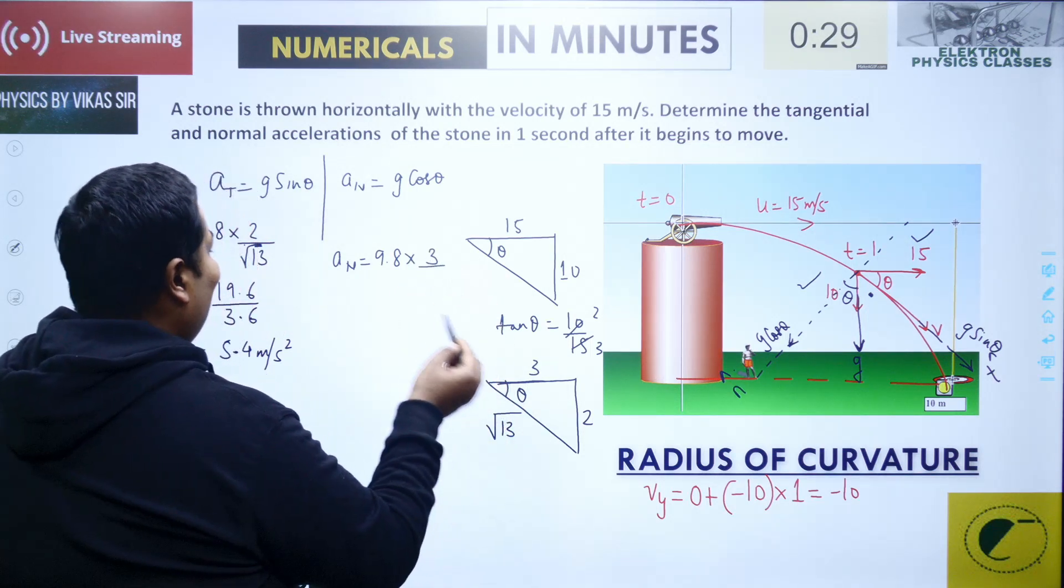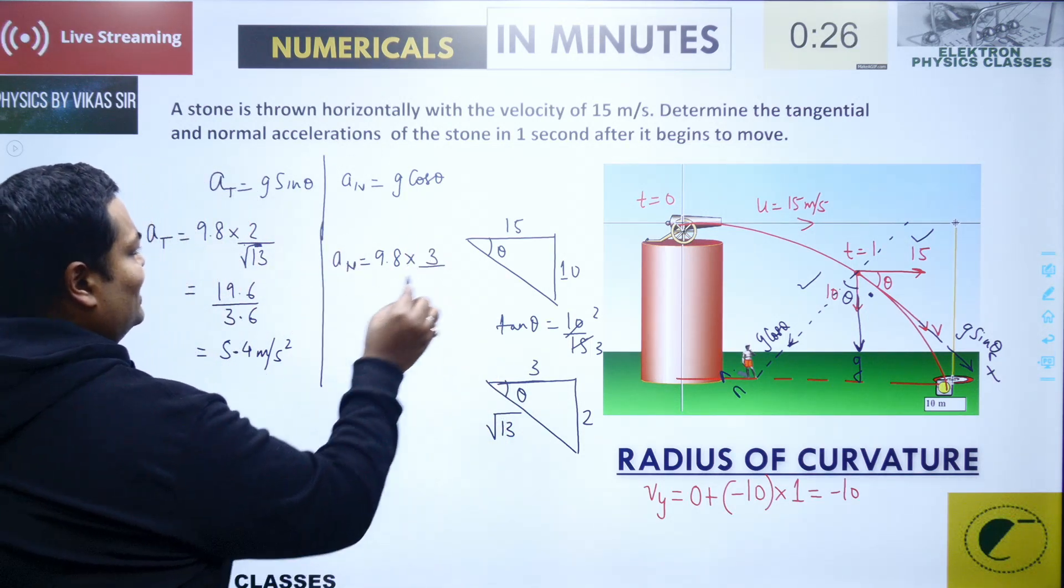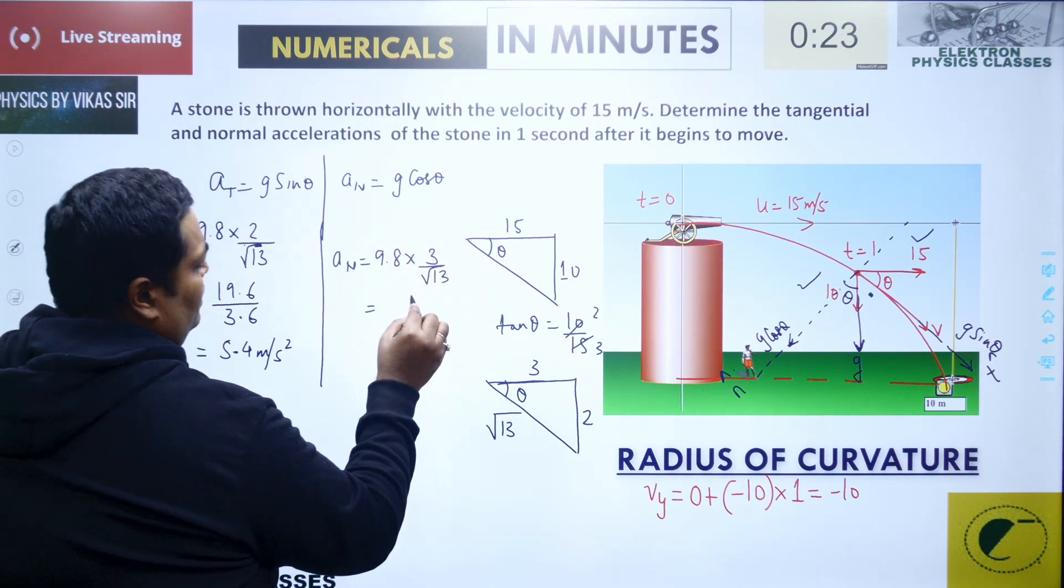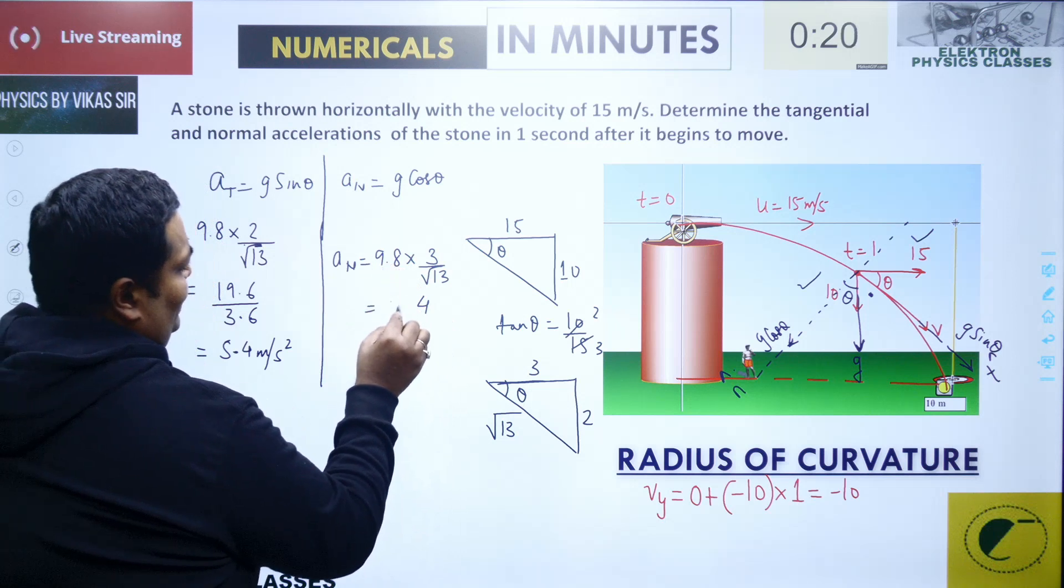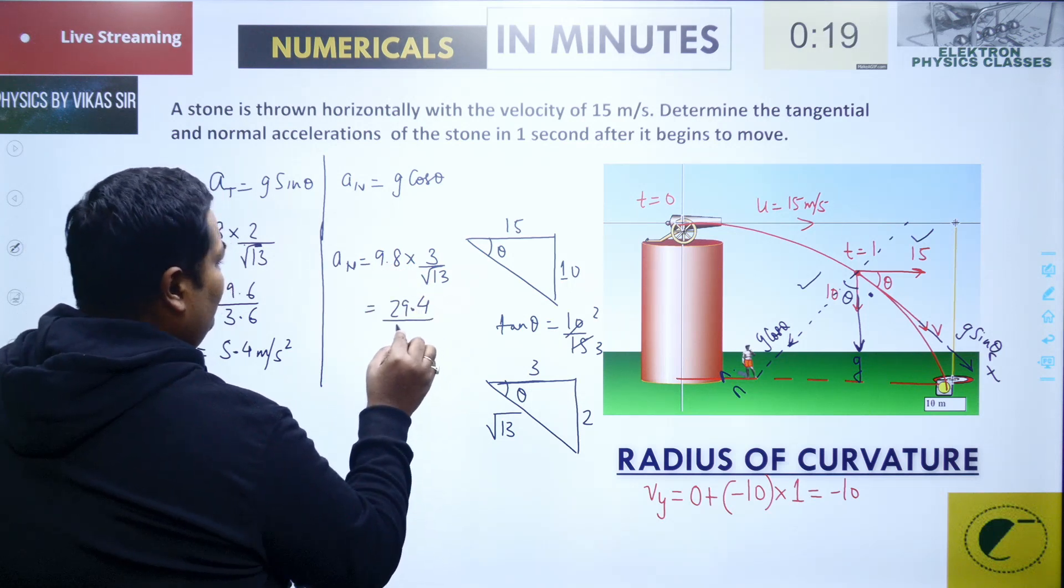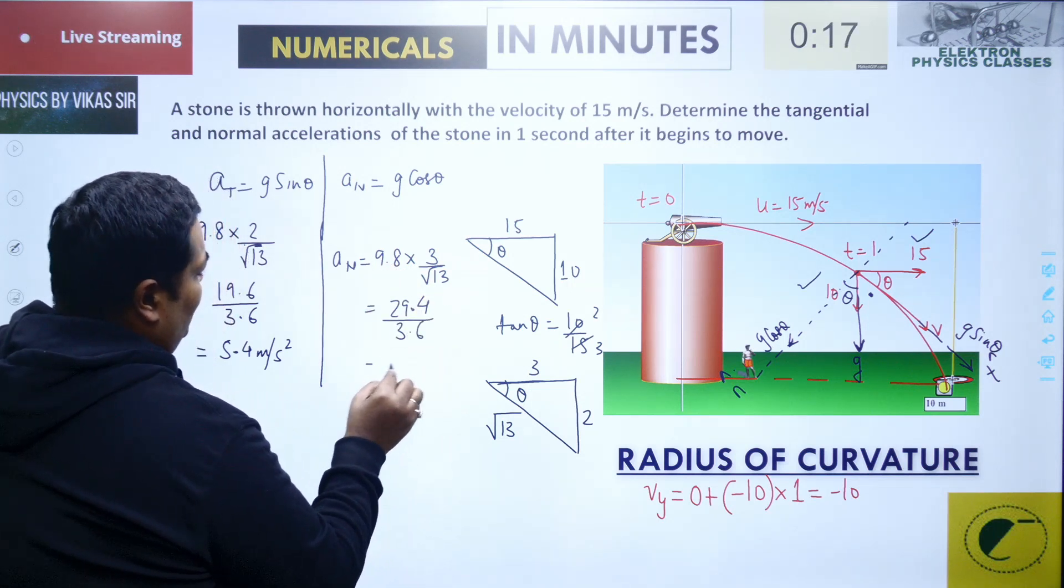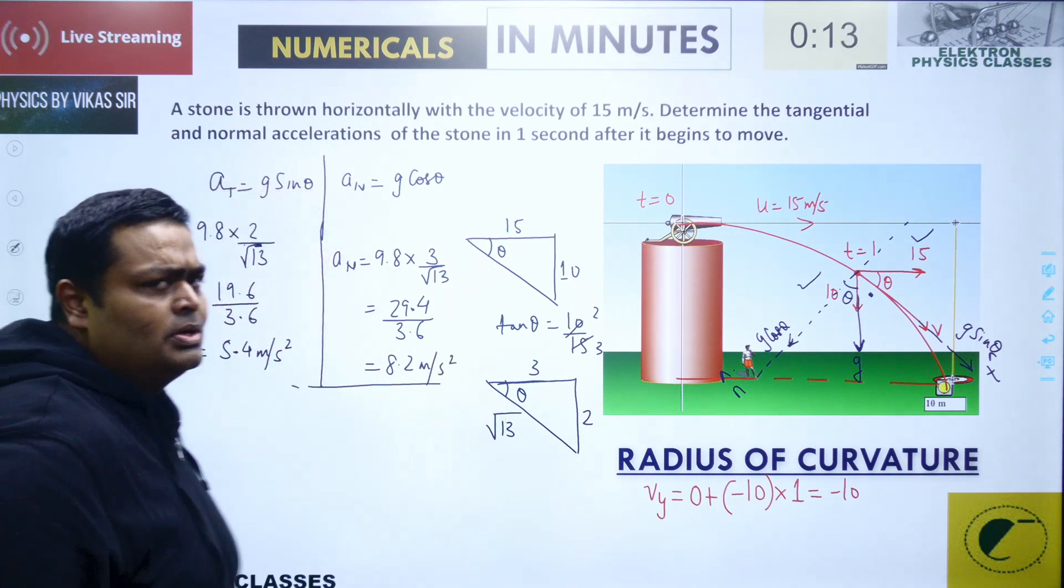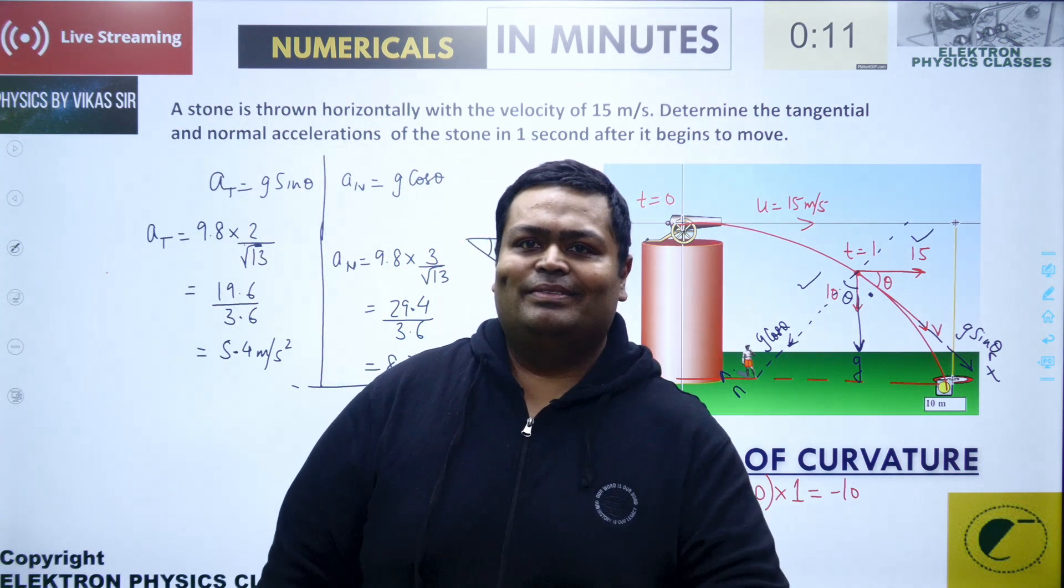That is once again divided by 3.6. So that's 3 times 8 is 24, plus 5.4 is 29.4 divided by 3.6. This will come around 8.2 meter per second square. So hopefully you have enjoyed this.